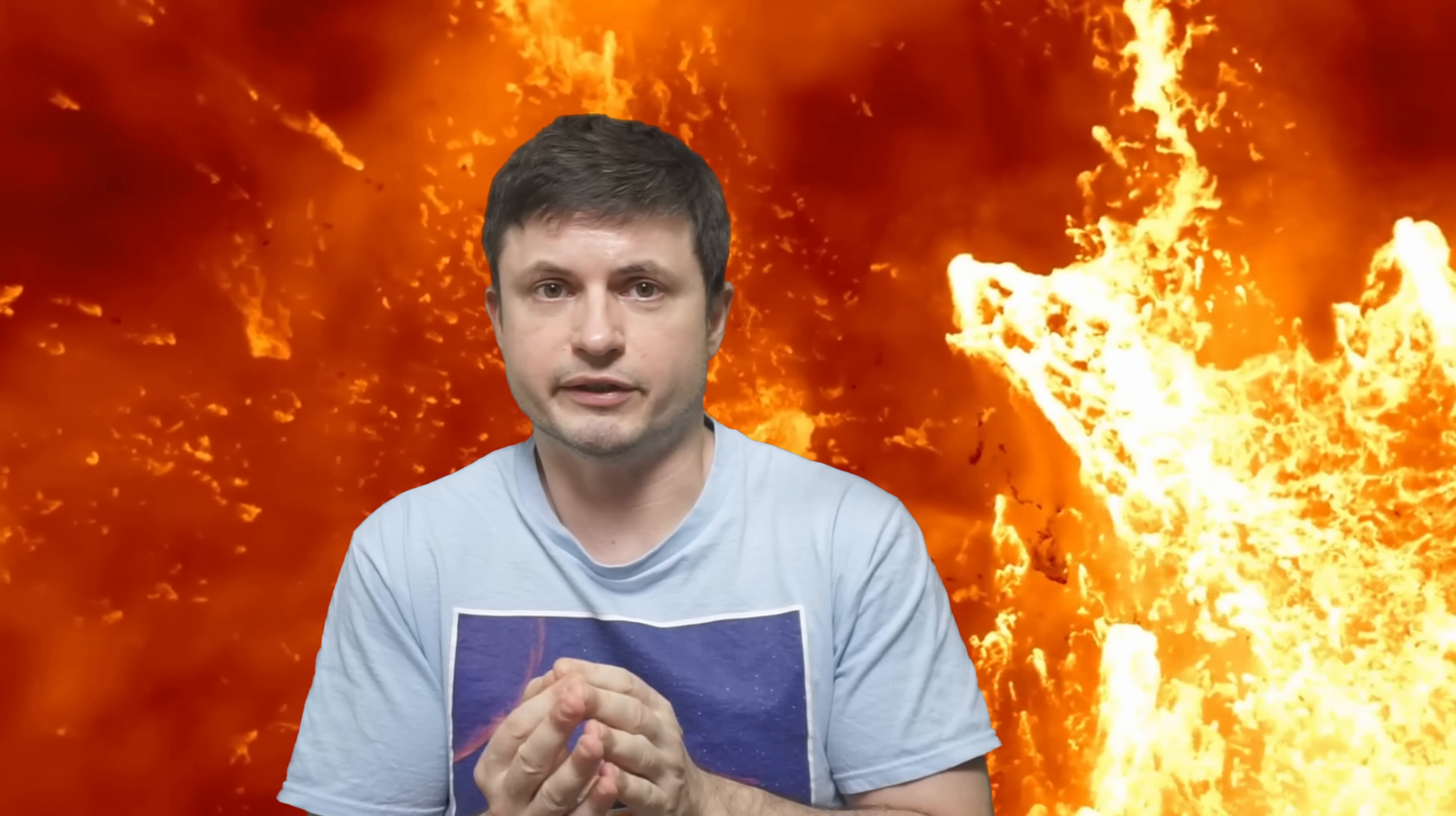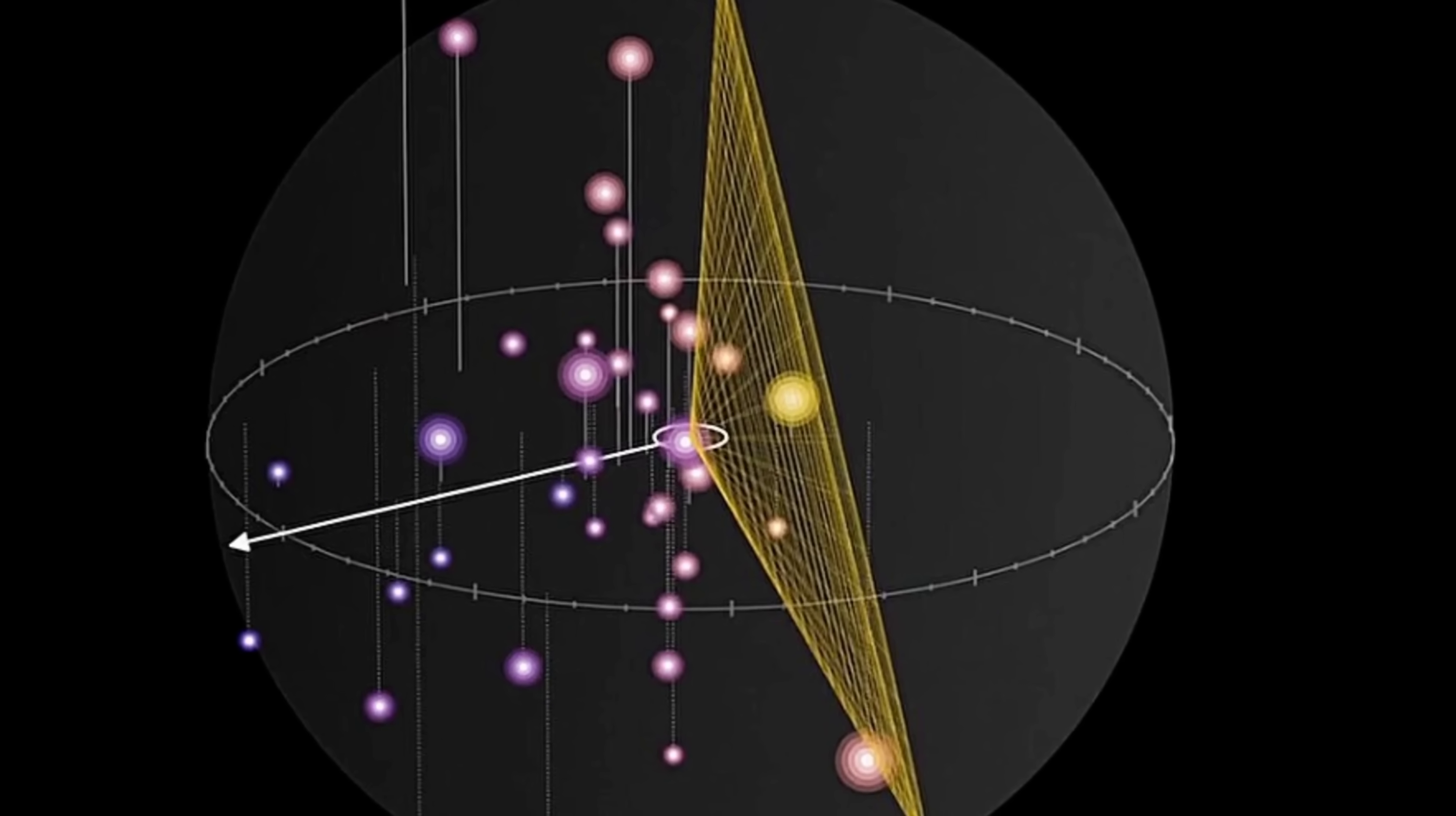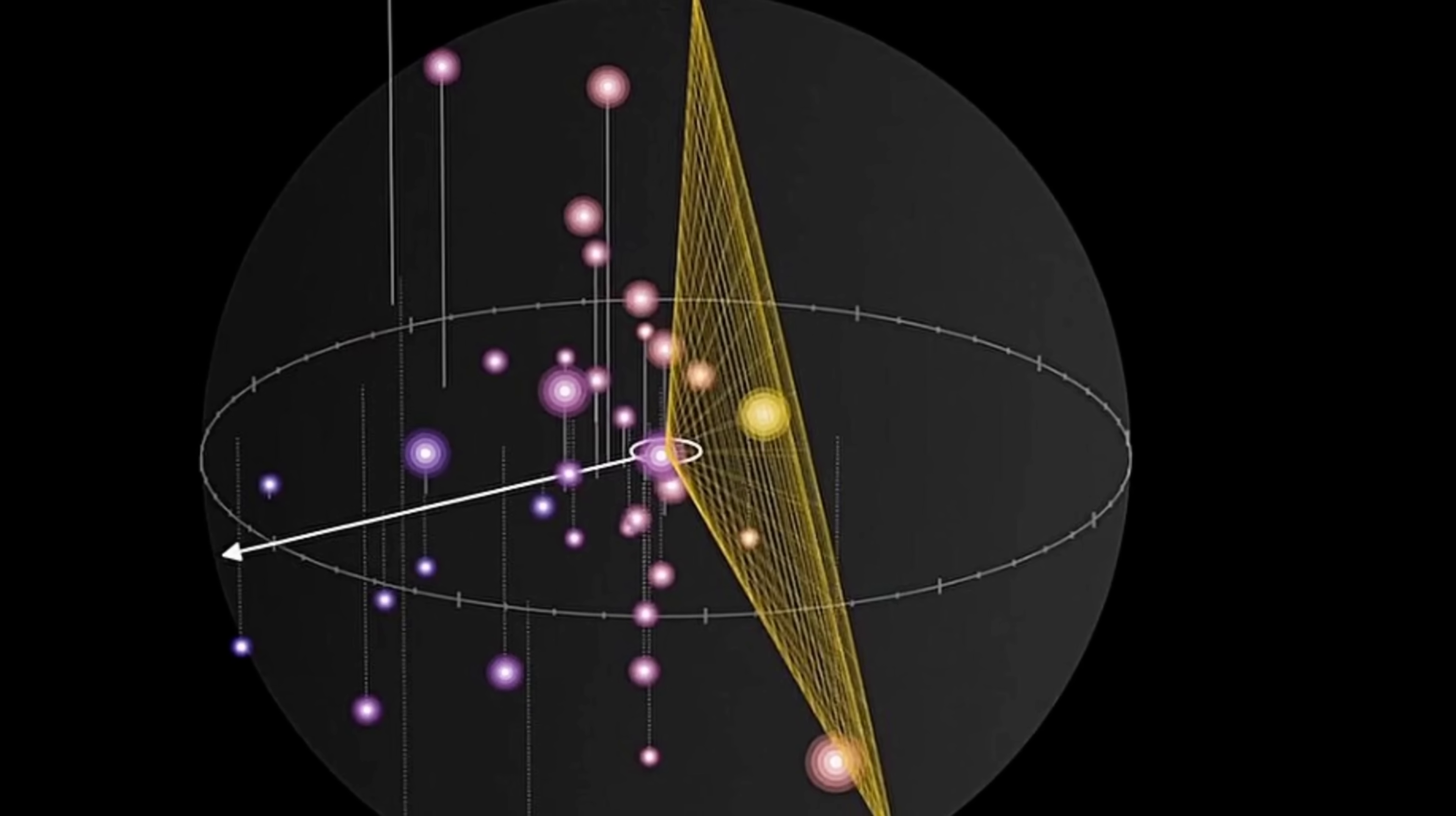But in this recent study the mystery kind of intensified. The study by Kosuke, Jamie, Kanahisa and the team you see right here surprisingly confirmed that many satellites around Andromeda seem to have a bizarre asymmetry. And asymmetry that's super difficult to explain. Here, of all 37 known dwarf galaxies, 36 seem to be positioned in a way that makes no sense. They're essentially contained in a kind of a cone of 107 degrees toward the Milky Way galaxy.